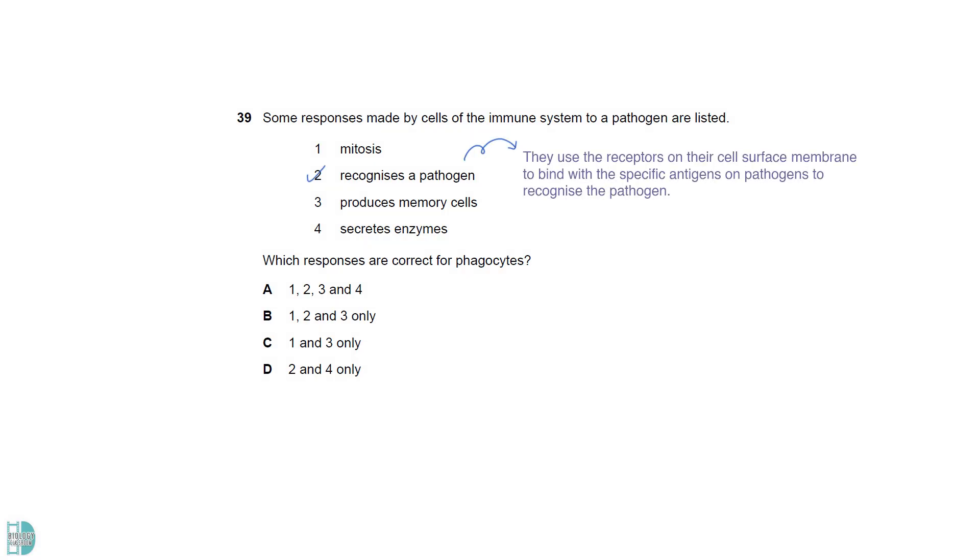Phagocytes use the receptor on their cell surface membrane to bind with the specific antigens on pathogens. This recognition will kickstart the phagocytosis process. After the pathogen is engulfed, the lysosomes in the phagocytes release hydrolytic enzymes into the phagocytic vacuole for the digestion of the pathogen to take place.